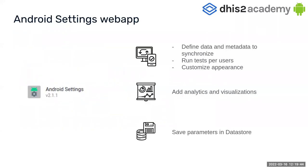So let's start with what is the Android settings web app. The web app will allow us to create configurations defining data and metadata in the Android app that the Android app will use for synchronization. You can also run tests per user, customize the appearance of the screens in your Android device, and create analytics and visualizations. All these parameters will be saved on the data store.